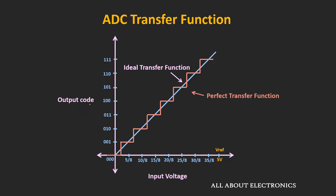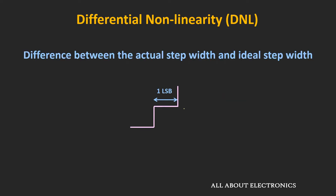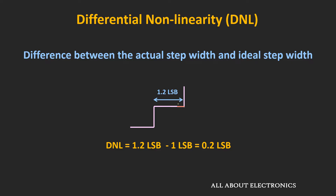Let's look at the differential and integral nonlinearities in the ADC one by one. The differential nonlinearity (DNL) is the difference between the actual step width and the ideal step width. Ideally, the size of each step should be equal to 1 LSB. But due to differential nonlinearity, the actual step width could be more or less than the ideal step size. For example, if the step width is 1.2 LSB, the DNL is equal to +0.2 LSB. On the other end, if the step width is 0.8 LSB, the DNL would be equal to −0.2 LSB. So DNL produces steps of varying widths.